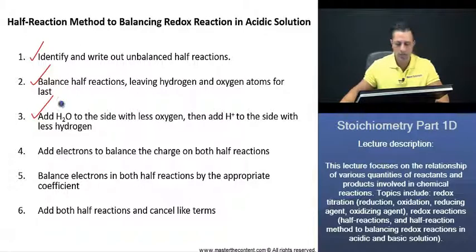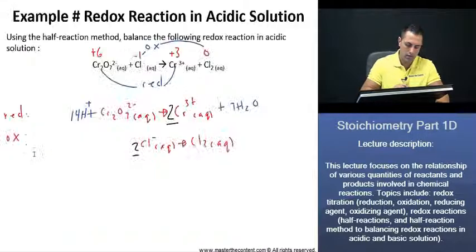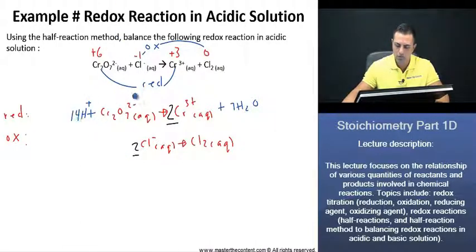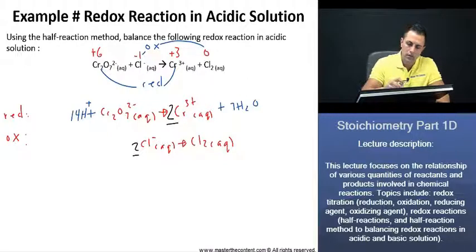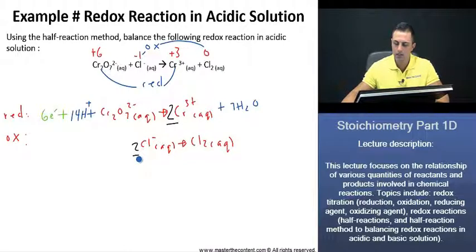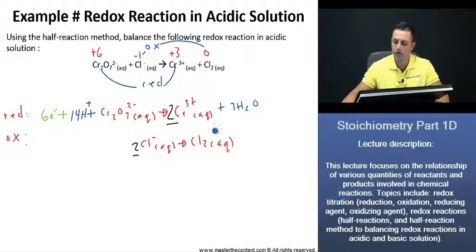Now we need to add electrons to balance the charge on both half-reactions. Looking at the reduction reaction, the charge on the reactant side is plus 12, and on the product side it is plus 6. So we need to add 6 electrons to the reactant side, making the charge on both sides plus 6. For our oxidation reaction, the charge on the reactant side is negative 2 and 0 on the product side, so we add 2 electrons to the product side.